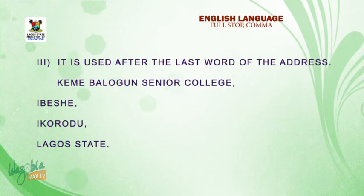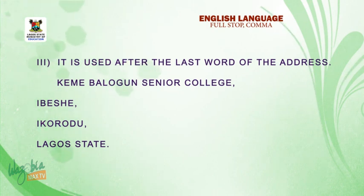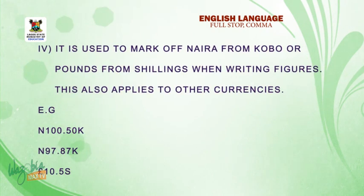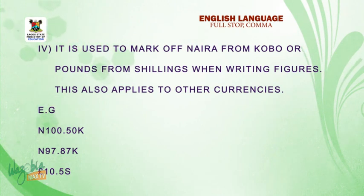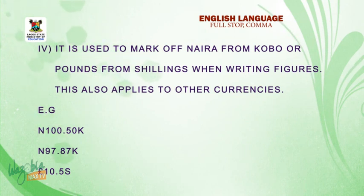Number three: it is used after the last word of the address. Number four: it is used to mark off naira from kobo, or pounds from shillings, when writing figures. E.g., 100 naira, 50 kobo.